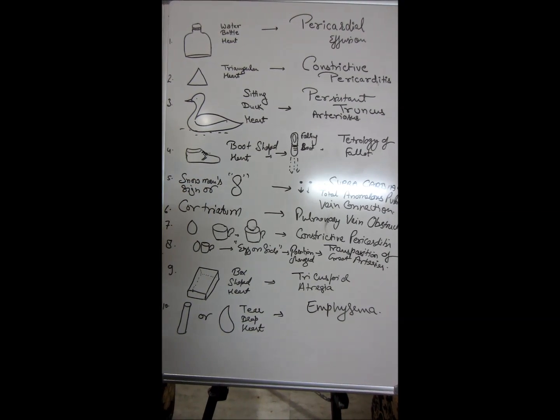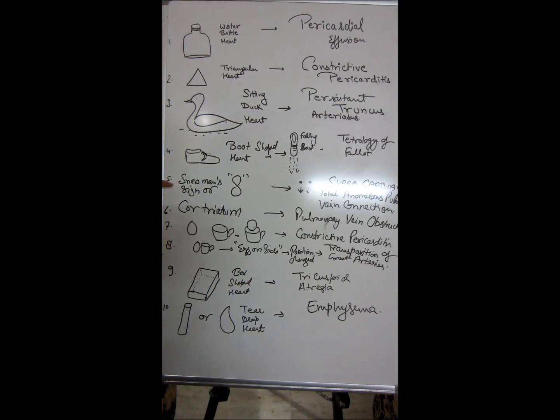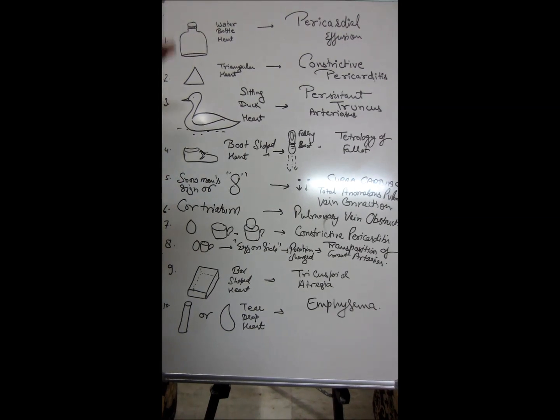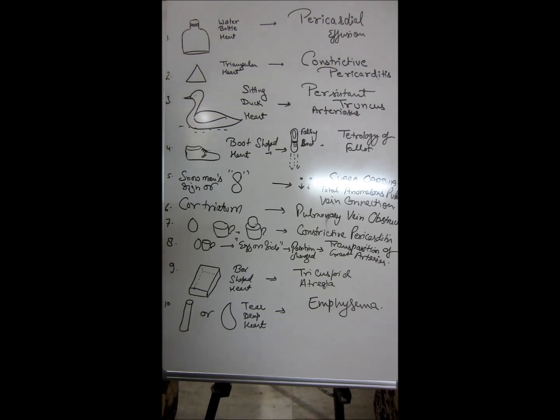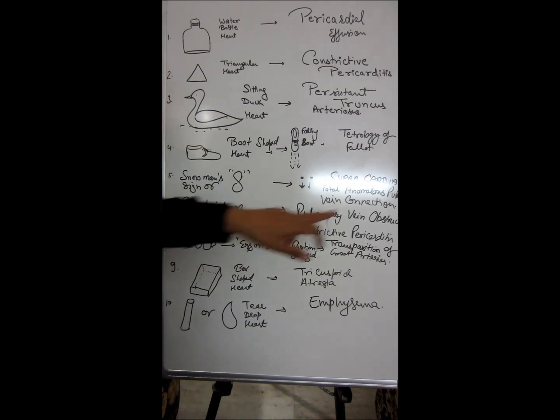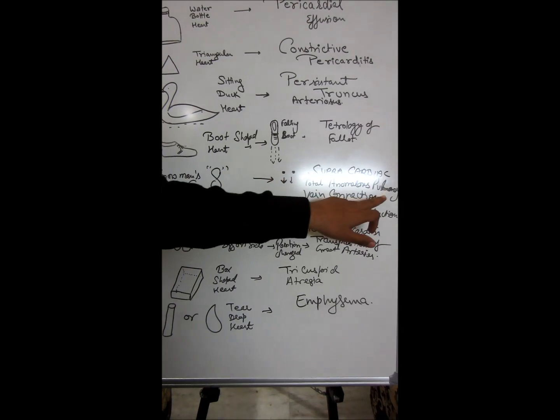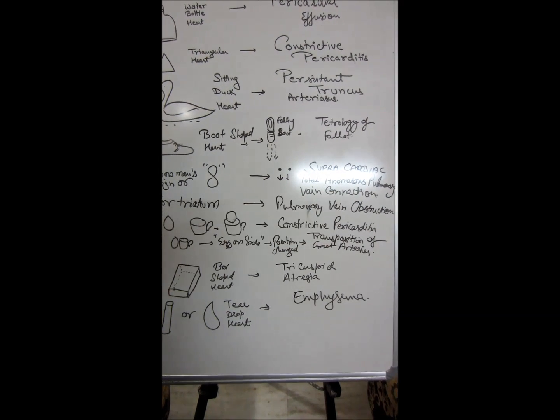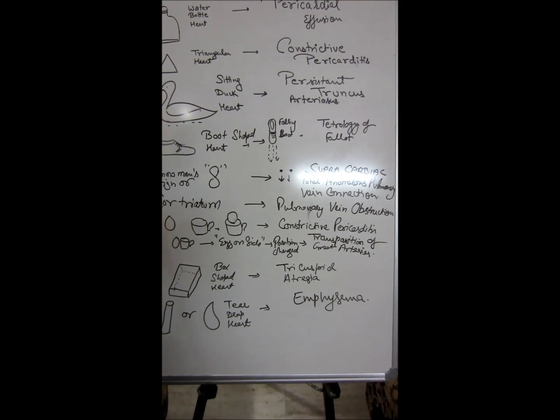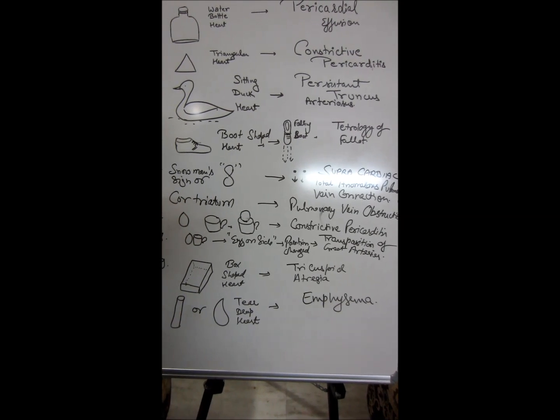Snowman sign or eight-shaped heart - the snow usually comes from up to down, that is from something superior. So supra cardiac TAPVC means total anomalous pulmonary vein connection, cor triatrium or triatriatum.